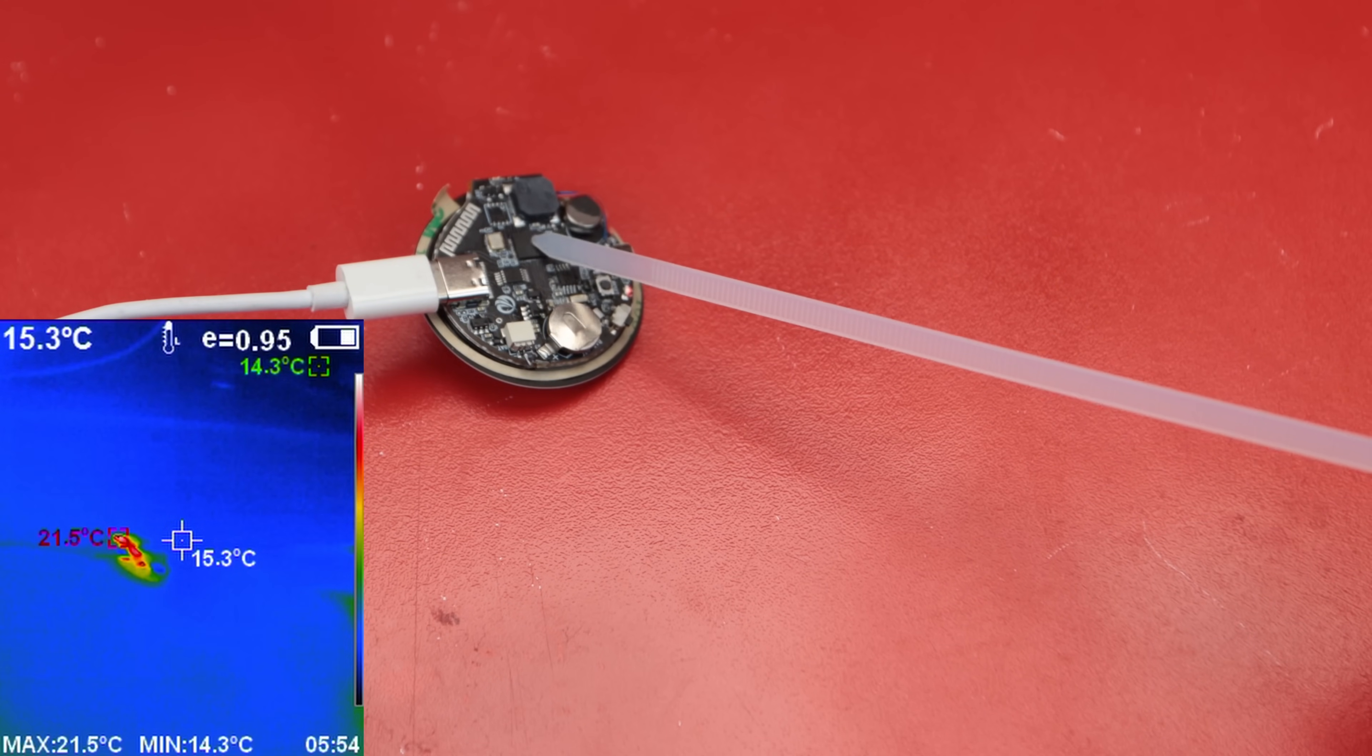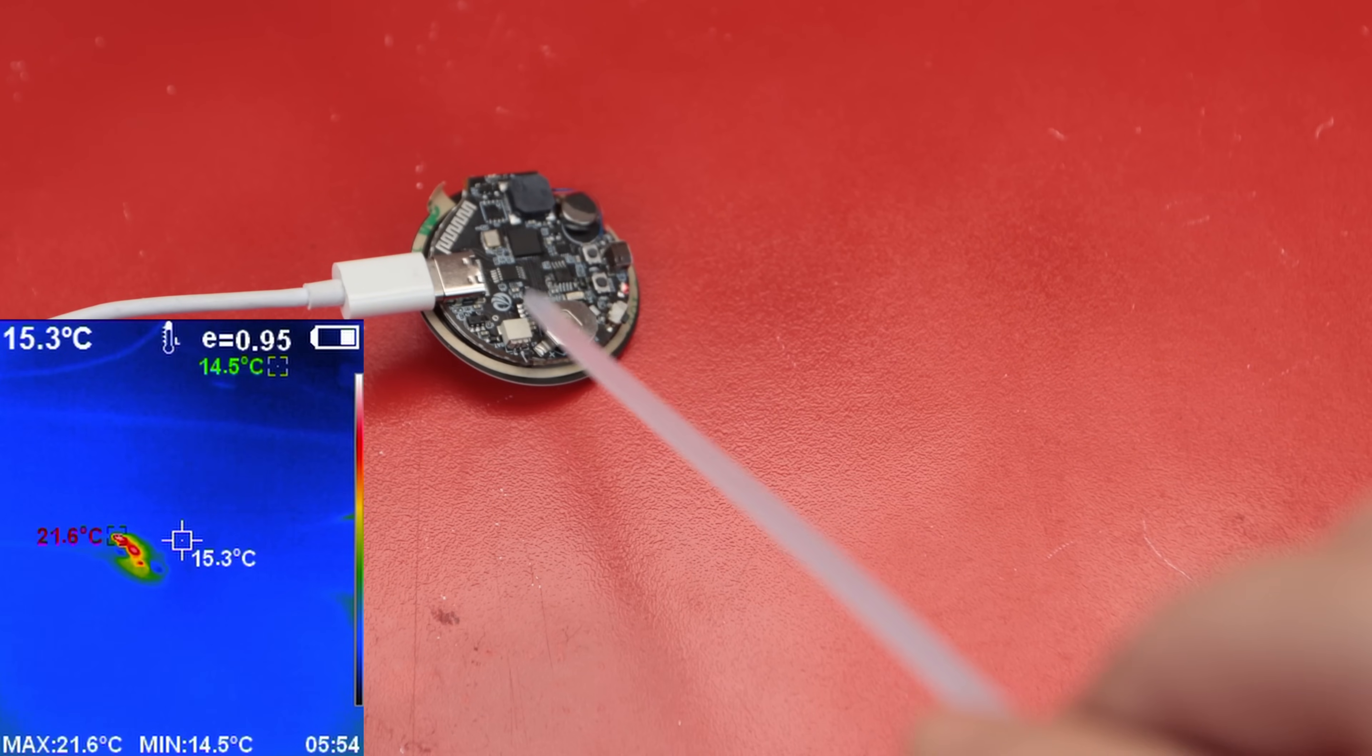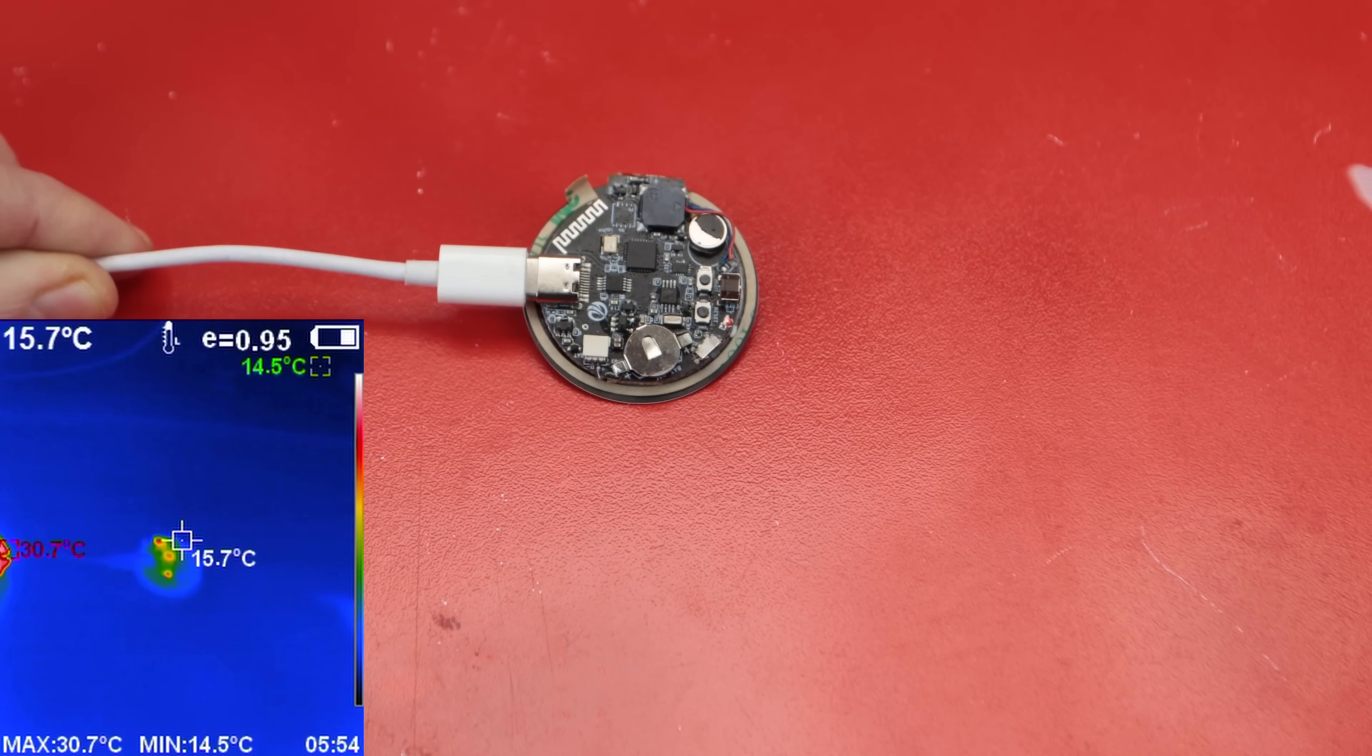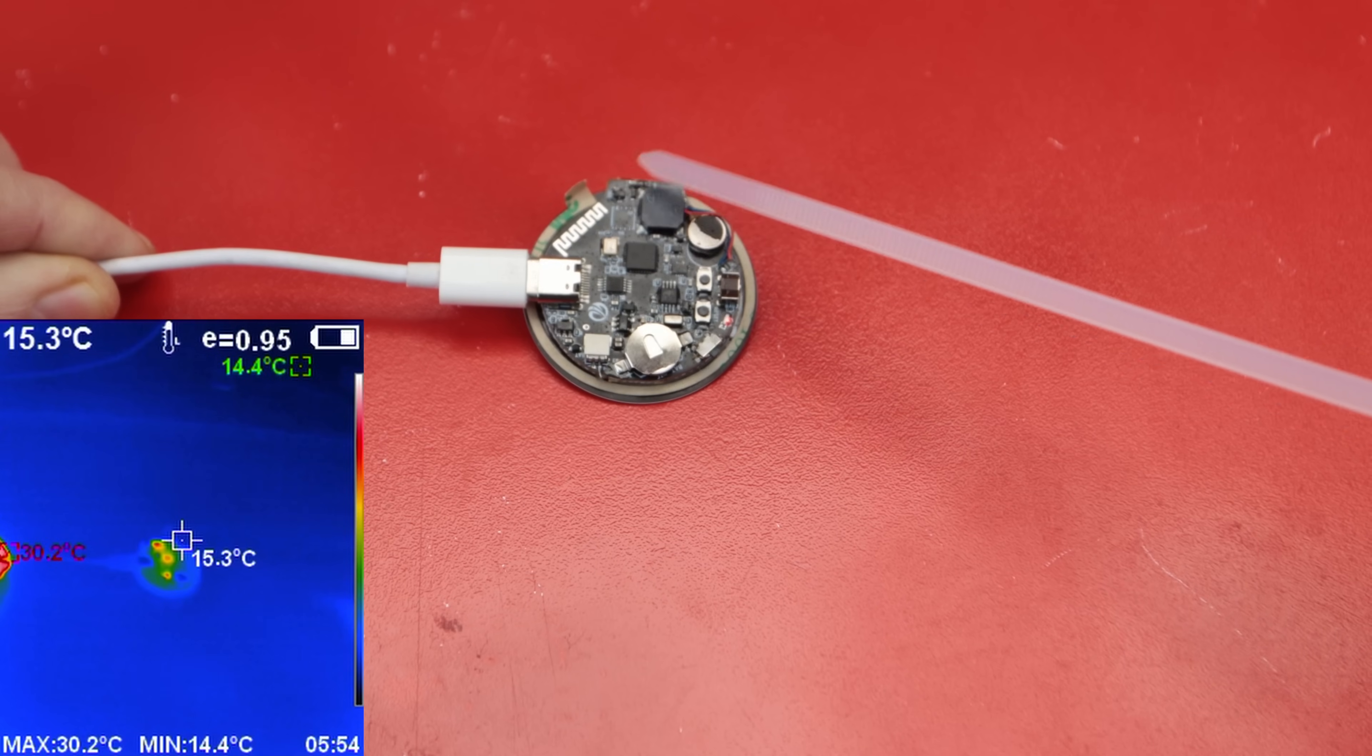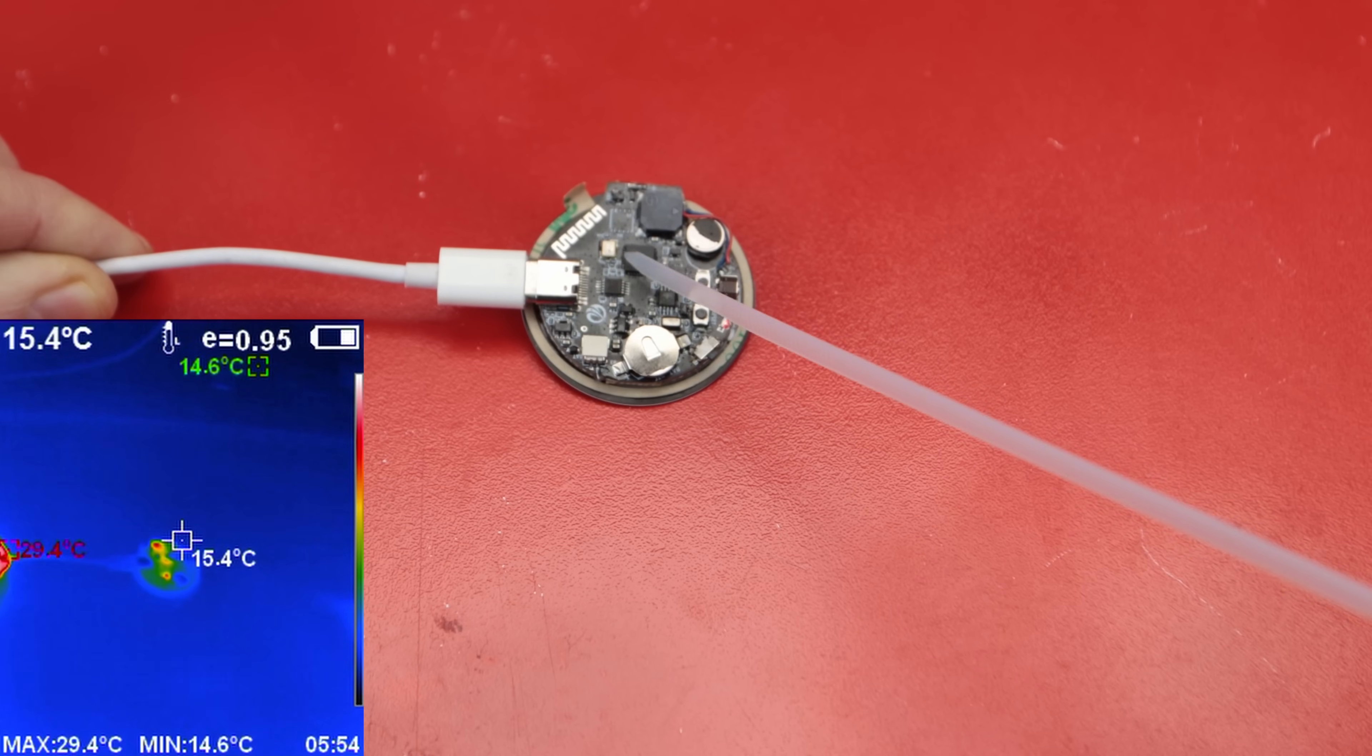I don't remember the code I programmed into the MCU but that shouldn't matter much right now. This angle isn't great for the thermal camera so let's adjust it to get a clear view. There are three spots heating up more than the rest of the board so I can focus on checking those three components.